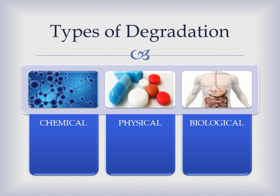Types of degradation are classified as chemical, physical, and biological. The chemical includes hydrolysis, which means splitting by water; oxidation, by the presence of oxygen; and photolysis, which is the decomposition or separation of molecules by the action of light.